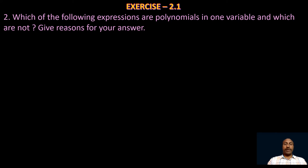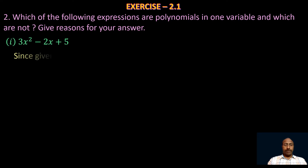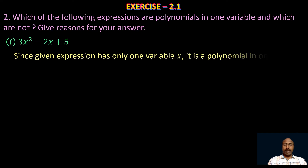The second problem asks: which of the following expressions are polynomials in one variable, and which are not? The first expression is 3x² − 2x + 5. In this polynomial there is only one variable, x. Since the given expression has only one variable x, it is a polynomial in one variable.